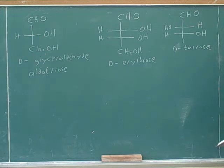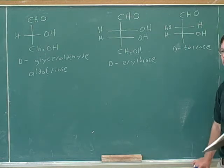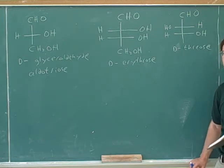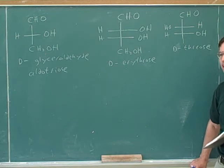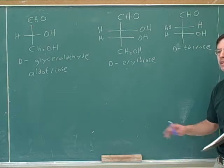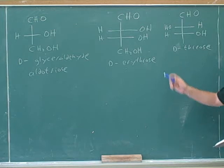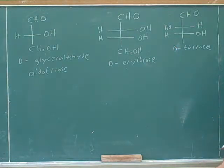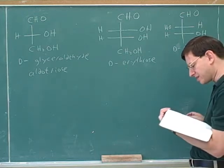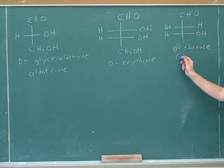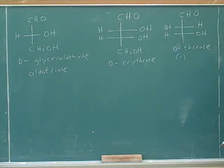What way does D-threose rotate plane polarized light — clockwise or counterclockwise? This was a trick question. Just as R and S don't tell you how something rotates plane polarized light, D and L don't either. D stands for dextrorotatory and L for levorotatory, but those are just historical curiosities. In the textbook, this compound is listed as D-minus-threose, meaning the experiment shows it rotates light counterclockwise. The plus and minus signs tell you how it rotates light; D and L do not.